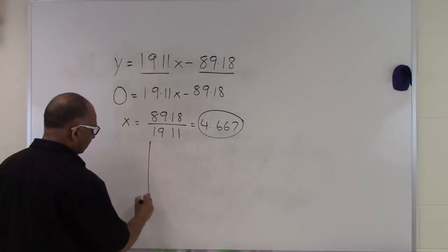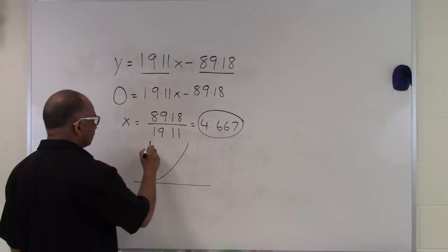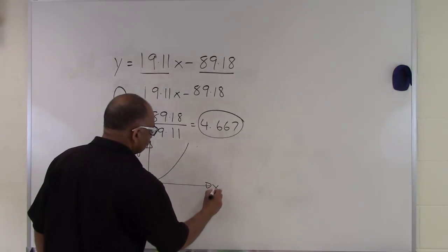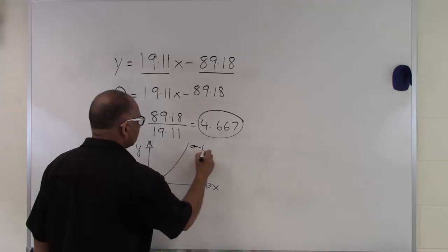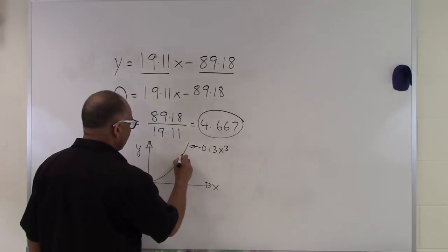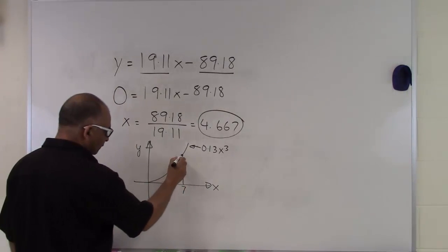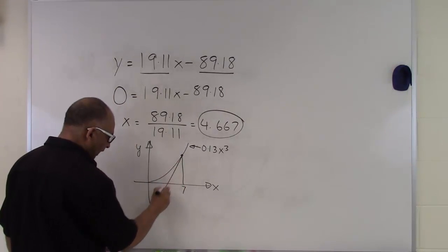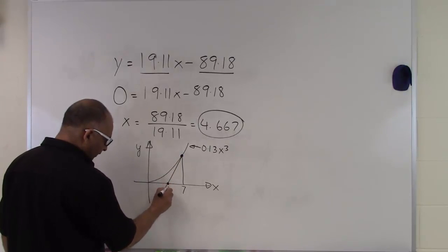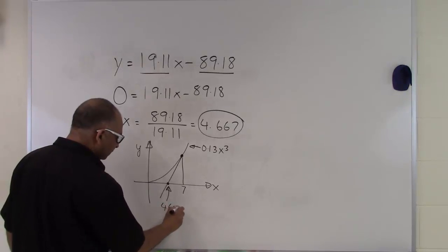Looking at it graphically, this is our function 0.13x³. We want the tangent line at x = 7. The tangent line crosses the x-axis at 4.667.